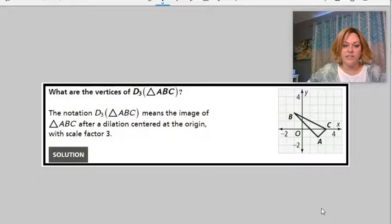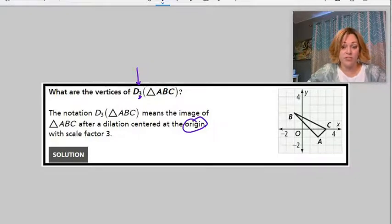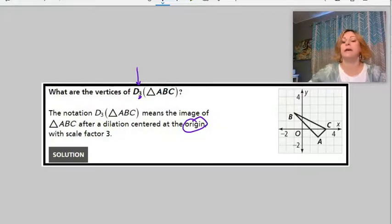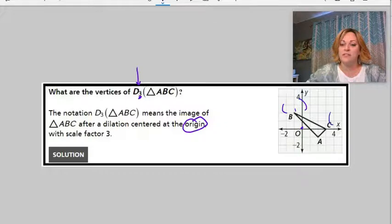What are the vertices? Now look at this notation. That means it's a dilation with a scale factor of 3. And it's really important. You have to know that the dilation is from the origin for this to work. Otherwise you'd have to do some different math. But if it's from the origin, basically you just take each of these ordered pairs and multiply by the scale factor of 3.